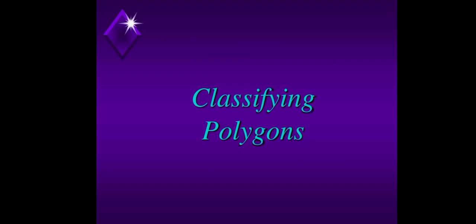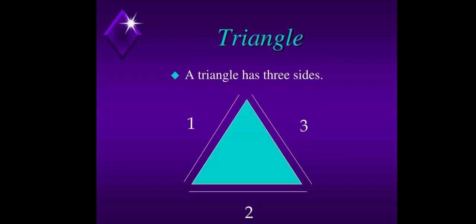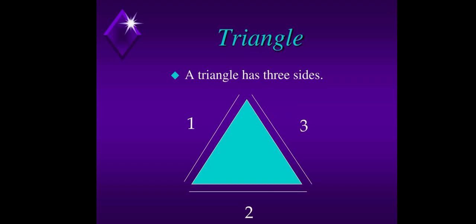Classifying polygons. So polygons have different classifications. First, we have a triangle. A triangle has three sides. Quadrilateral. Quadrilateral has four sides.